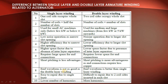Next difference: EMF waveform is not as good in single layer as in double layer winding. Next difference: single layer is easy to repair. And the final difference: single layer has a lower number of harmonics whereas double layer has more harmonics. These are the differences between single layer and double layer winding.